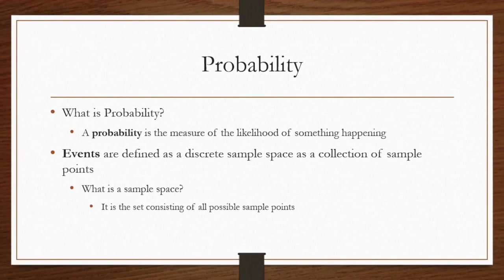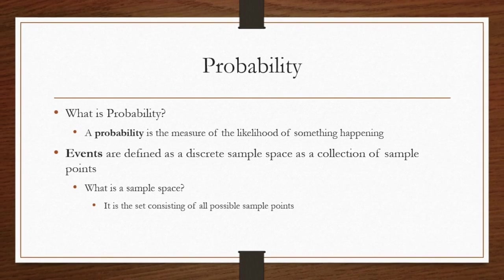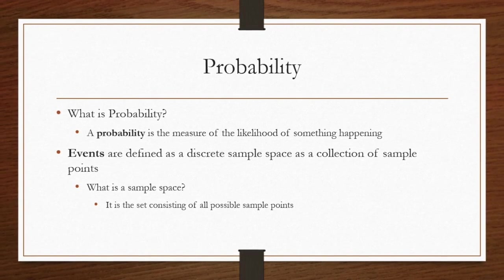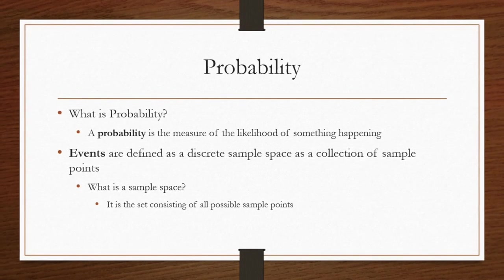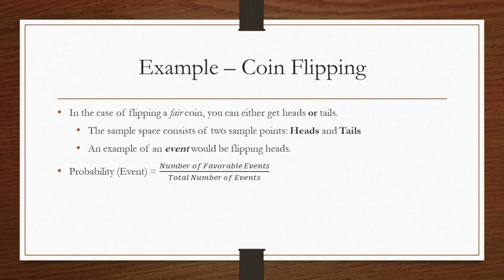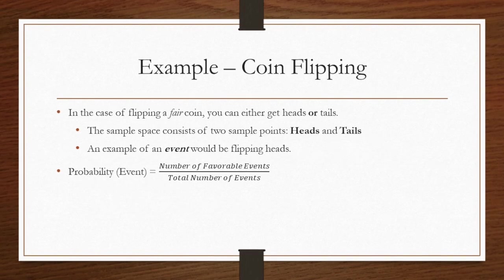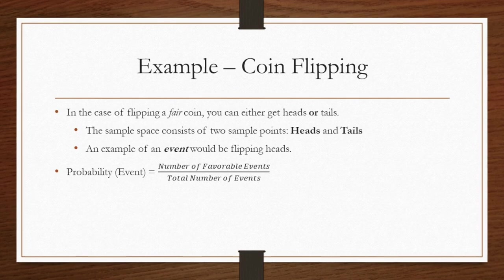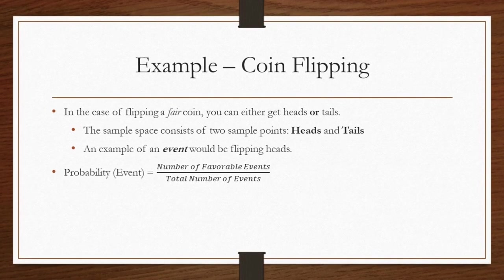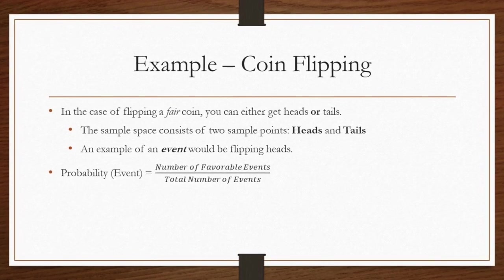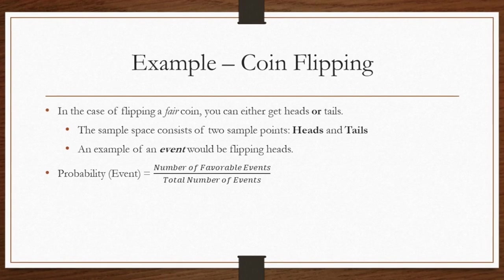Events are defined as a discrete sample space as a collection of sample points. A sample space is the set that contains all possible sample points. For example, when we flip a coin, we have two possibilities or sample points. The flip will show heads or it will show tails. These two possibilities make up the sample space.